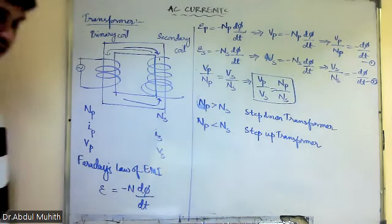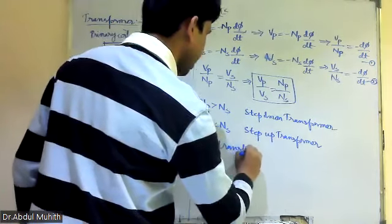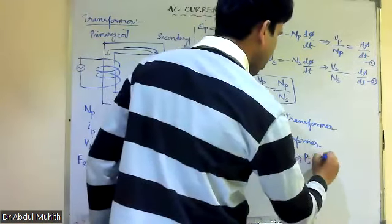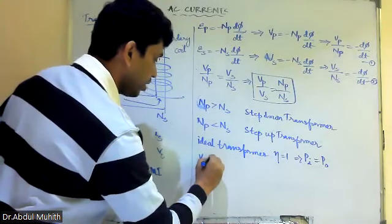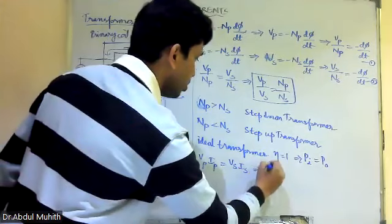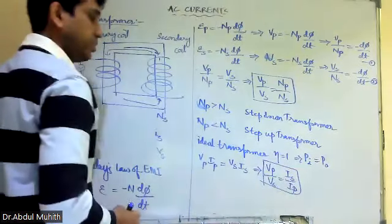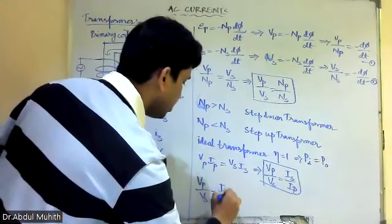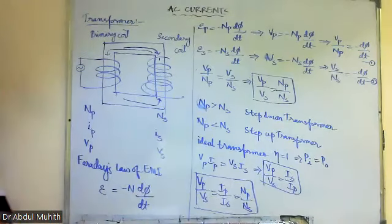For an ideal transformer, efficiency η = 1, or 100%. In that case, power input equals power output: Vp × Ip = Vs × Is. Cross-multiplying gives Vp/Vs = Is/Ip. Combining with the turns ratio formula, we get the complete relation: Vp/Vs = Is/Ip = Np/Ns. This is very important — there will definitely be a numerical from this concept, possibly a one- or two-mark question.